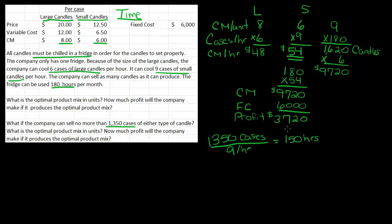If I have 180 hours total, that means I've got 30 hours left to make large candles. Well, how many candles can I make in 30 hours? Times 6, because I can make 6 cases per hour. So that's 180 cases of large.